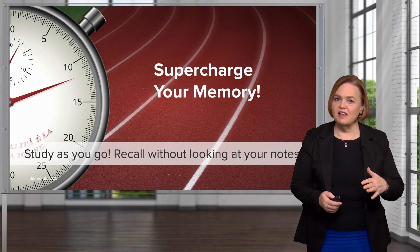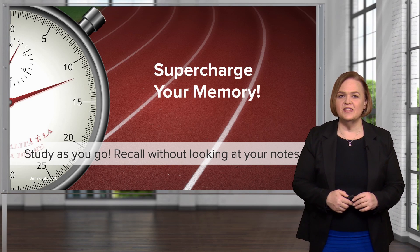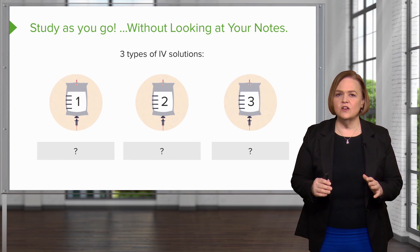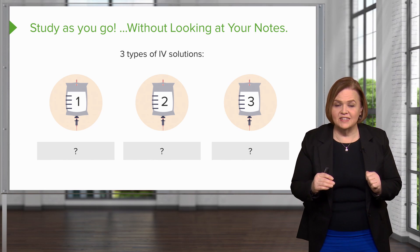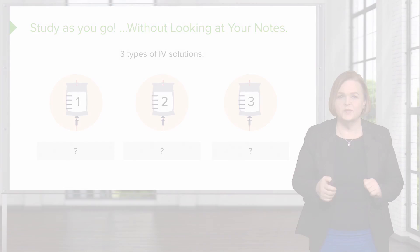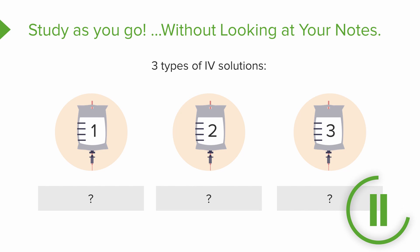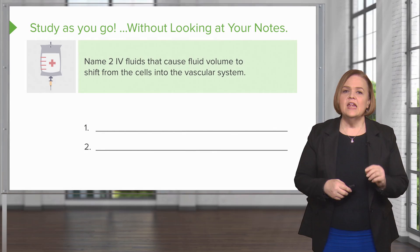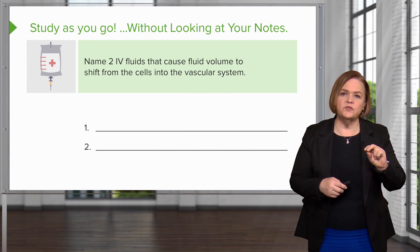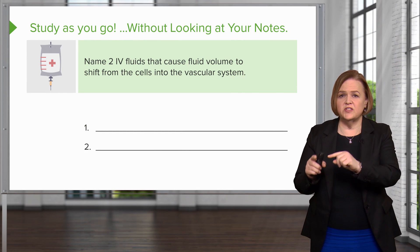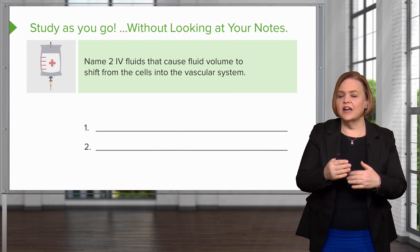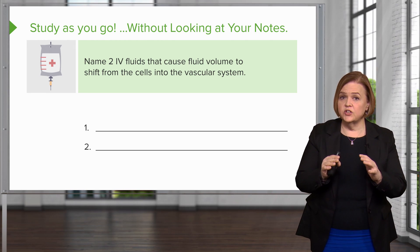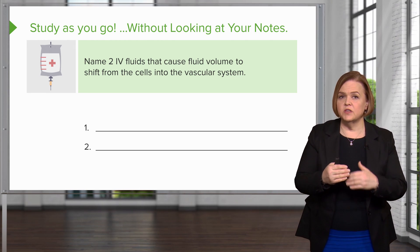Let's try another question. Without looking at your notes, name the three types of IV solution — think tonicity. Then name two IV fluids that cause fluid volume to shift from the cells into the vascular system. See if you can actually remember the names of the individual fluids, not just their tonicity.